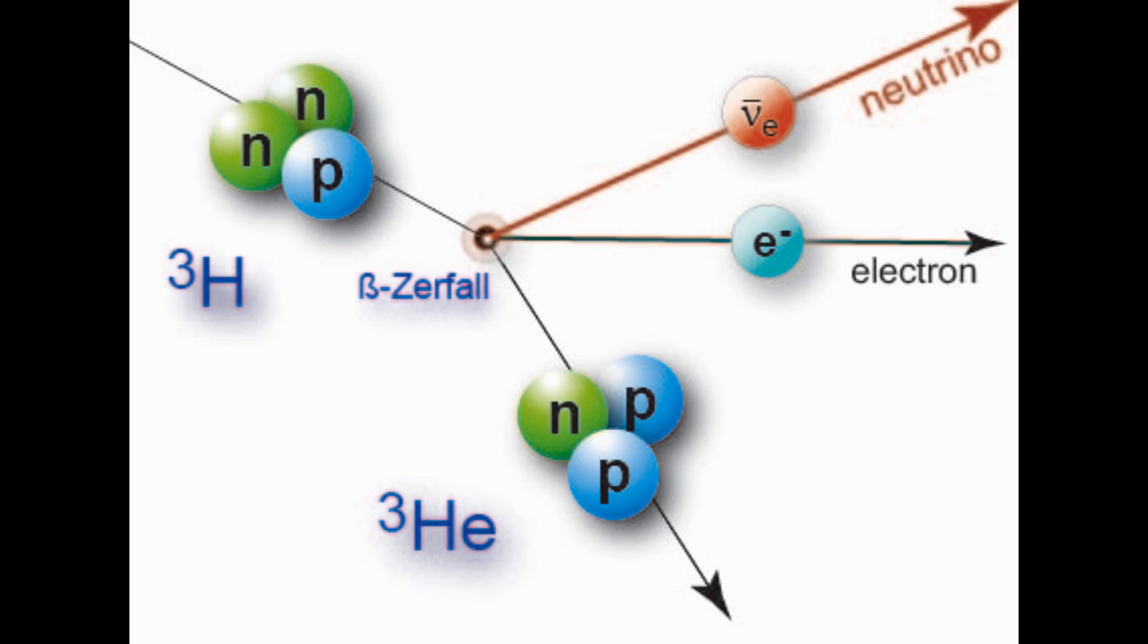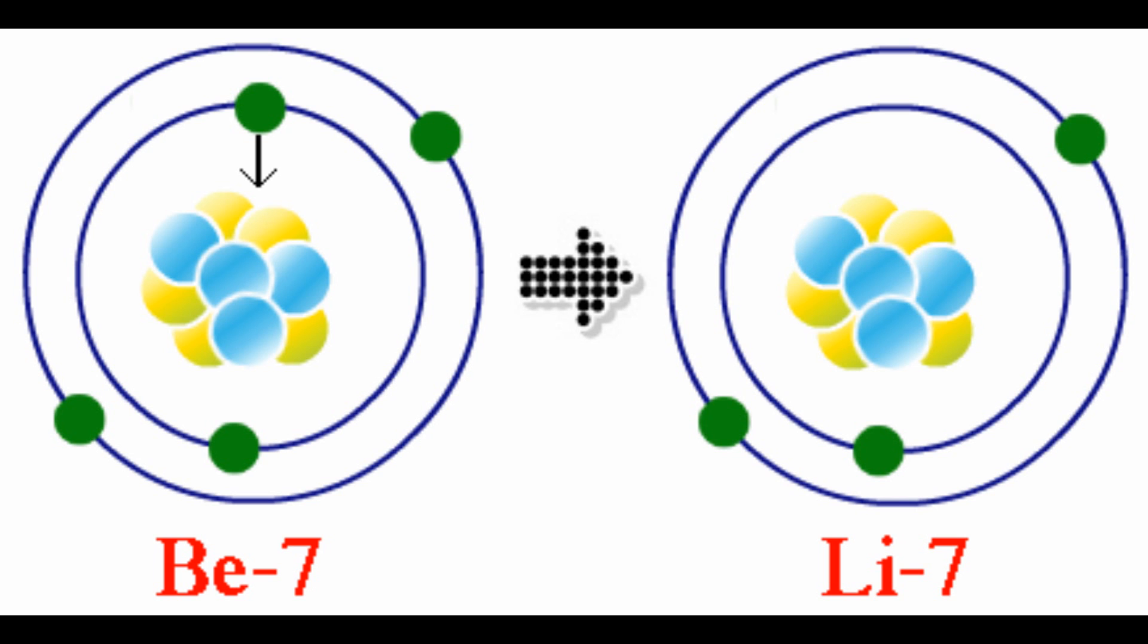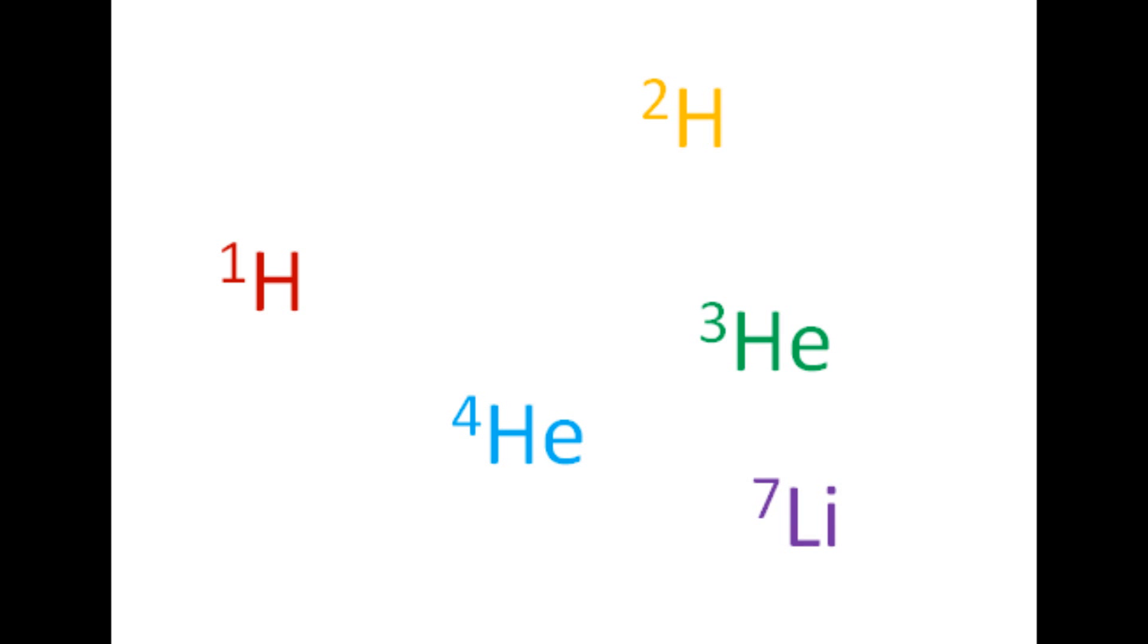Big Bang nucleosynthesis ended before elements heavier than beryllium-7 could be made. Tritium, which is the isotope of hydrogen with two neutrons, also called hydrogen-3, is unstable, and any tritium made would eventually decay into helium-3. Similarly, the beryllium-7 produced during Big Bang nucleosynthesis decayed into lithium-7. The end result is that Big Bang nucleosynthesis created five isotopes: hydrogen-1, hydrogen-2, helium-3, helium-4, and lithium-7.